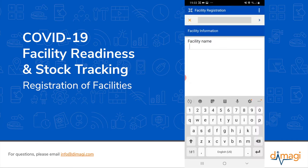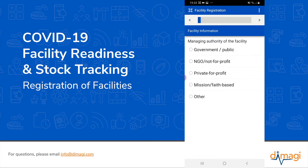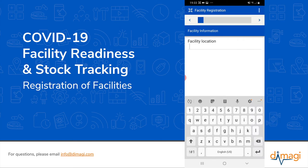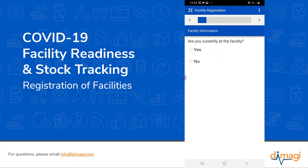We've now entered the facility registration form. Here we're going to register a facility called the City Hospital. We're going to say that this facility is managed by a government organization. The facility location we're going to describe as Cape Town, South Africa. There's a question that asks if we are currently at the facility — for the sake of this demo, we're going to say yes, and it now allows us to capture the GPS location.